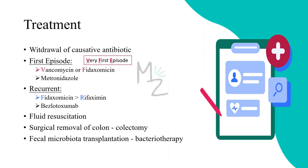Recurrent C. difficile infections are common after the first or second episodes. For recurrent episodes, use fidaxomicin; if that fails, rifaximin, and bezlotoxumab can also be used. A mnemonic: 'Future Recurrences' — F for fidaxomicin, R for rifaximin. Due to diarrhea, fluid resuscitation is also necessary. In severe cases, surgical removal of the colon may be required. Fecal microbiota transplantation — administering bowel flora from a normal individual via enema or nasoduodenal tube — is another effective but limited approach.